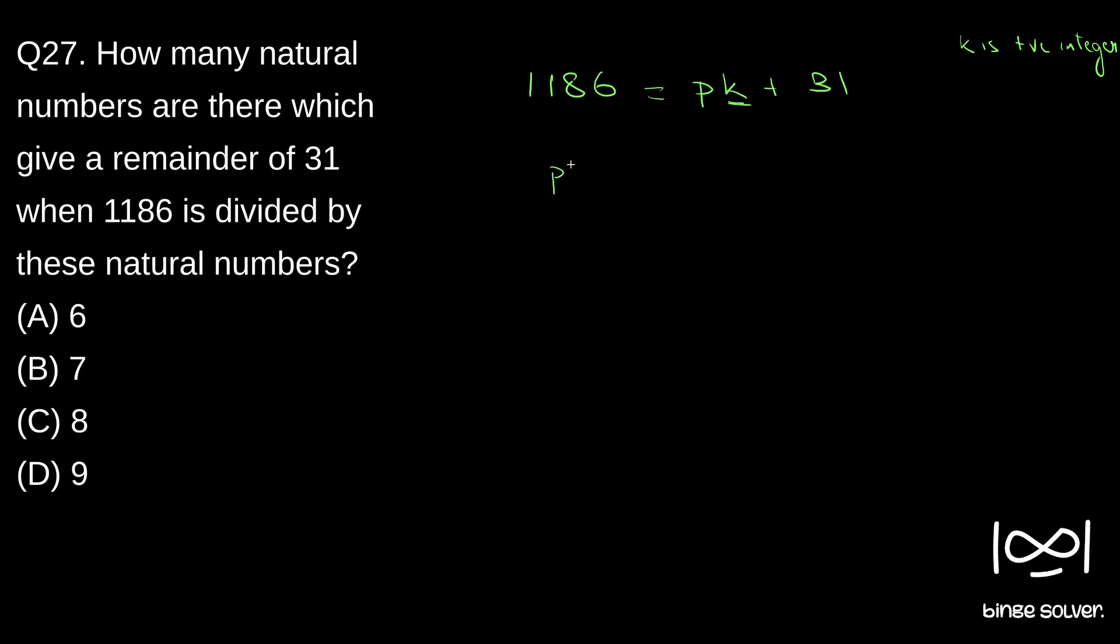So that means P into K will be of the form 1186 minus 31 which is 1155. So our natural number, natural number into a positive integer should give 1155. So we can factorize this to see what are the possible combination P will have. If you've divided it with 11, if you can see clearly it divides with 11.